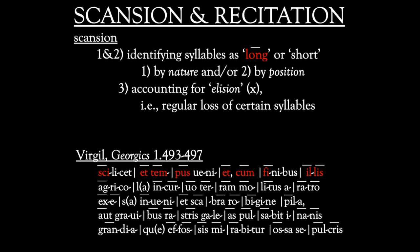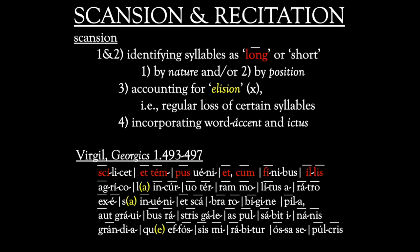The term elision is in scare quotes here, because the actual practice in antiquity seems to have been rather a slurring together of the relevant syllables, which in Greek is called synaloipe. But for our purposes in recitation, elision is simpler. Every elided syllable in the passage has been put into parentheses. This interaction between Latin's natural word accent and its cultural or, as it were, artificial meters is a chief source of the musicality of classical Latin poetry.